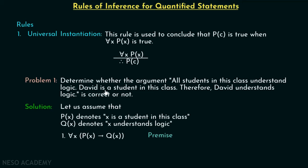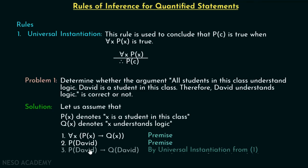From the second statement, 'David is a student in this class,' we can write P(David). This is the second premise. From the first premise, we can derive P(David) implies Q(David). This is done by universal instantiation from premise one — because we know if for all x P(x) is true, then for some c, P(c) has to be true. Here, instead of c we have David, so we replace x by David to get P(David) implies Q(David).